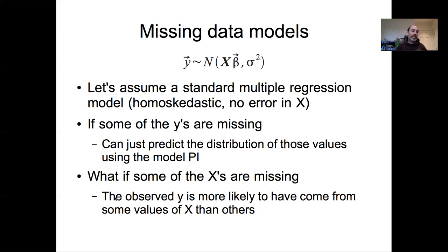In traditional regression approaches, missing x's require you to essentially drop those rows of data. The x's you don't observe means you have to throw out those y's. In a multiple regression or multivariate model, if you have multiple x's and you're missing one of them, you have to throw out all those rows of data. A little bit of sparseness on one x and a little bit on another x can end up resulting in throwing out a lot of data overall. So we want ways of accommodating missing data and leveraging the information from the x's and y's that we do observe.